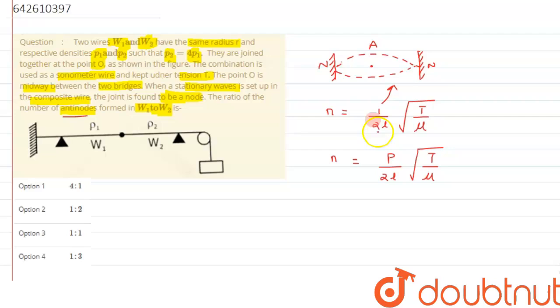That will represent the number of anti-nodes only. So for the first wire we can say, now if we just manipulate this formula a bit, we can write frequency equals P by 2L under root of T by mu.